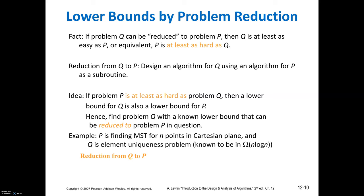You can also obtain the lower bound by problem reduction. Suppose you have a problem Q which can be reduced to another problem P for which an algorithm already exists. Since you already know the algorithm for P and its lower bound, if you can solve Q by applying algorithm P, then the lower bound of Q is approximately equal to the lower bound of problem P.